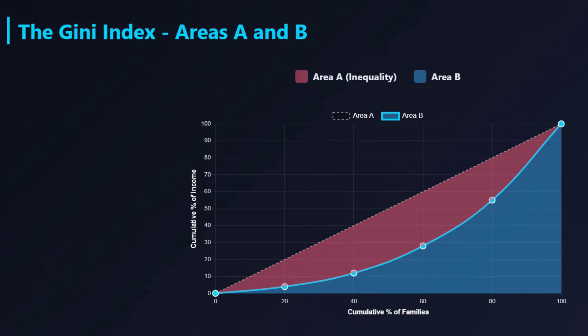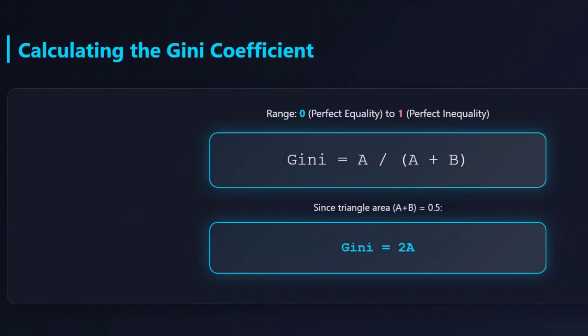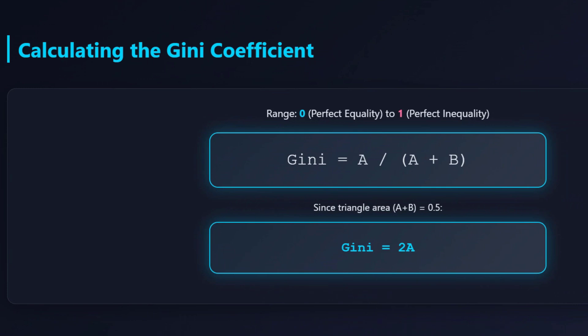A picture is great, but it's still a picture. How do you compare one country's sag to another's, or track your own country over time? We need a way to move from this visual to a single, comparable number. How do you actually quantify that visual gap? To really compare different places or different times, we've got to turn that picture into one single hard number — something like 0.345. What on earth does that mean?